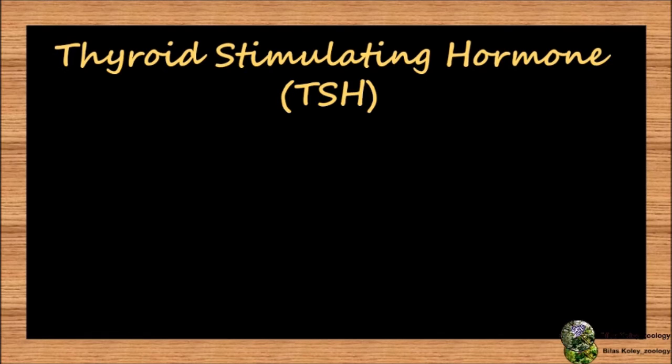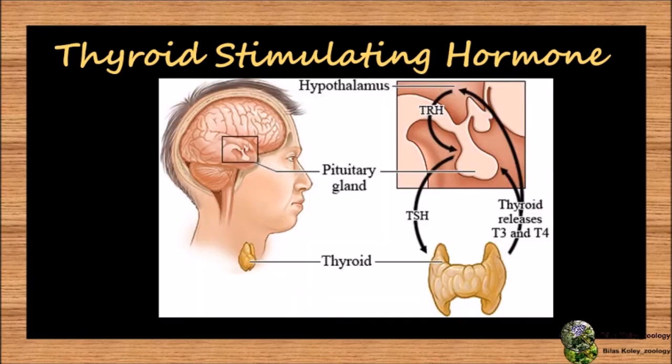We will discuss the thyroid stimulating hormone, that is TSH. It is also denoted as thyrotrophin. Its chemical nature is glycoprotein. Its physiological effects include increased iodine intake, synthesis of thyroxine, and breakdown of colloid of thyroid follicle to release thyroxine.